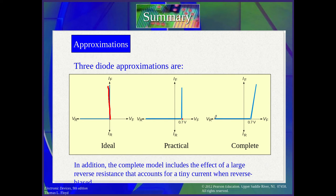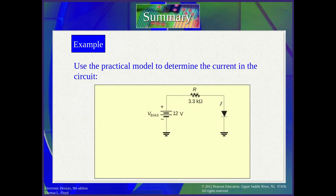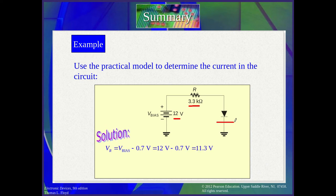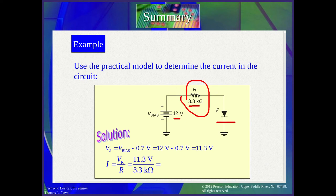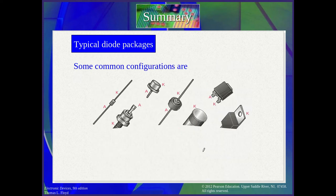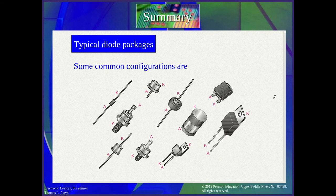We didn't plot the breakdown because it would be at hundreds of volts — not easy to reach under normal conditions, but it does occur when there is a fault in your circuit. Now, using the practical model to determine the current: given a supply voltage of 12 V and a resistance of 3.3 kΩ, the barrier potential is 0.7 V. The voltage across the resistance is 12 − 0.7 = 11.3 V. The current is V_R / R = 11.3 / 3300 ≈ 3.4 mA. There are also different diode configurations and package shapes available in the market.